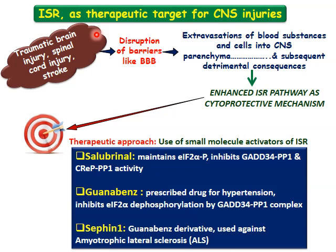These insults lead to enhanced ISR pathway activation as a cytoprotective mechanism. Using small molecule activators of ISR can further boost these cytoprotective effects. For example, salubrinal has been used — a small molecule activator of ISR that maintains EIF2-alpha in its phosphorylated form by inhibiting the activity of GADD34-PP1 and CREP-PP1 phosphatase complexes. Guanabenz is another small molecule activator, also a prescribed drug against hypertension, which inhibits EIF2-alpha dephosphorylation by the GADD34-PP1 complex. Similarly, a Guanabenz derivative called Sephin-1 has a comparable effect.